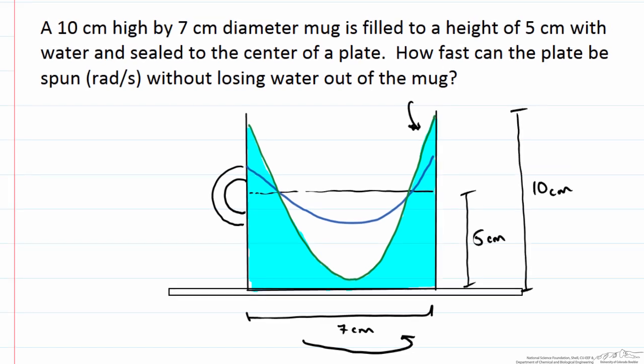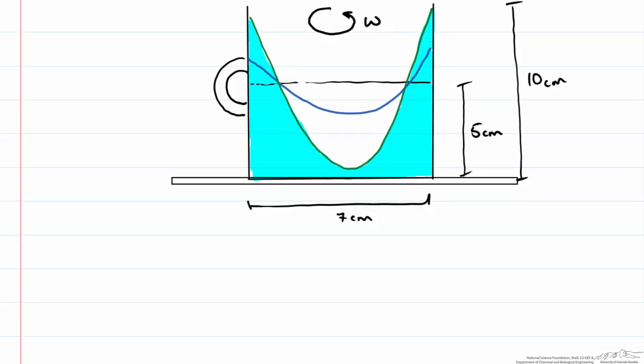How do we set up a problem like this? Let's start with the following equation for rigid body rotation where the height of our free surface is equal to the rotational velocity squared times the radius squared over 2 times the acceleration due to gravity plus some constant. In this case we are going to use H₀. Now H₀ is going to be the distance at the center from the free surface to the bottom.